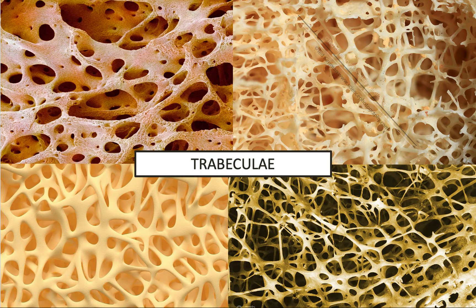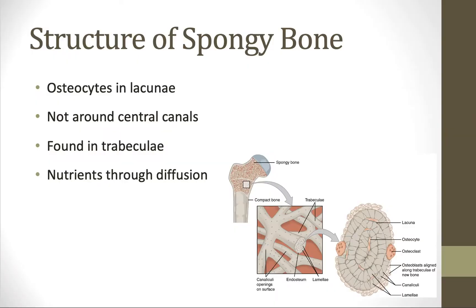Now let's talk about trabecular bone or spongy bone. Trabeculae are this open lattice work — a coral-like, spongy-looking part of bone. This is hard bone matrix, just like in compact bone, but there's a lot more open space. Because there's a lot more open space, we don't need so many tubes and tunnels. We still have osteocytes sitting in lacunae — they still need holes to sit in because the osteocytes are living and the trabeculae are still hard — but they are not situated around central canals. Instead, the osteocytes are just in the trabeculae and get their nutrients through diffusion, because they are so close to the surrounding blood vessels. They do have canaliculi, but they don't need those central canals.